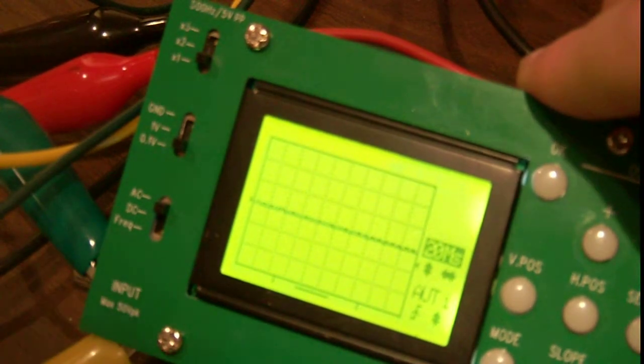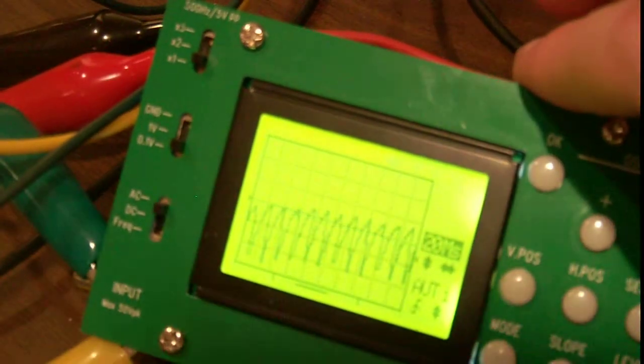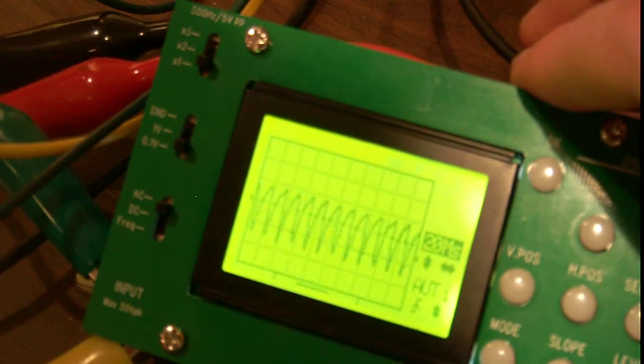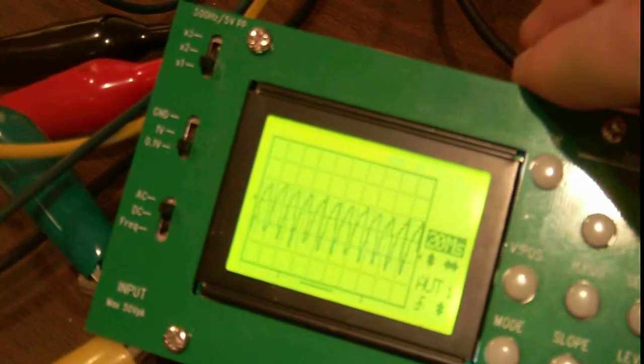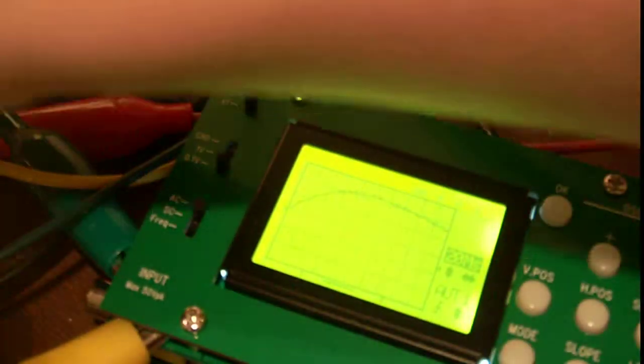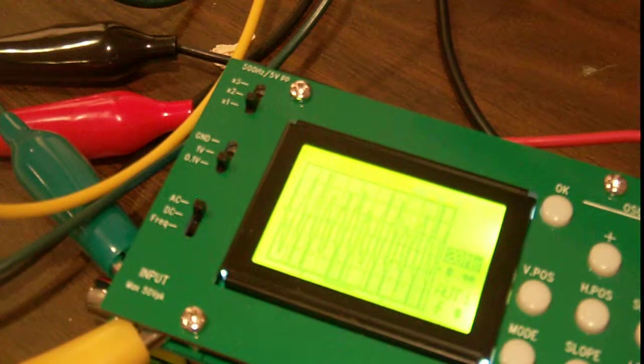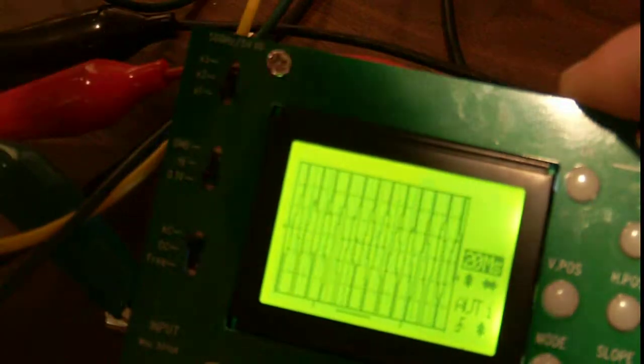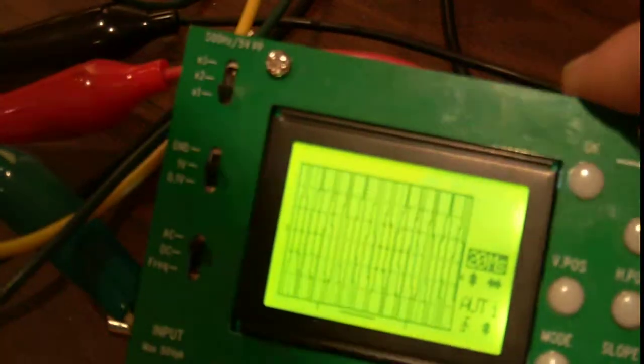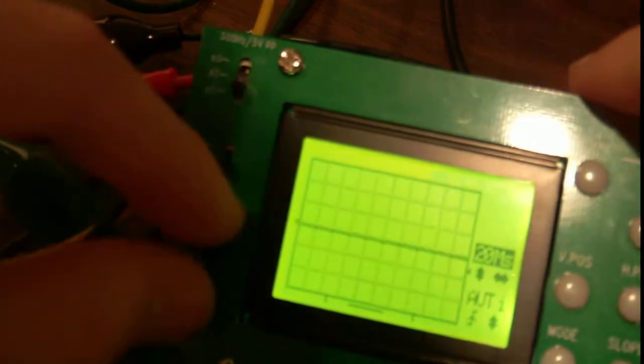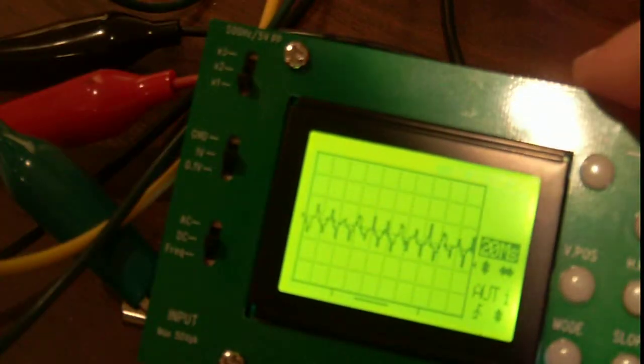And this is on 0.1 volts per division. So the signal itself is about 300 or so millivolts large at that point before the switching transistor. I'm going to now connect it to the output of the switching transistor, the PNP. Switch it to 1 volt per division. Oh, it's set to AC, sorry. DC.